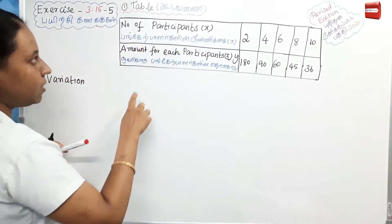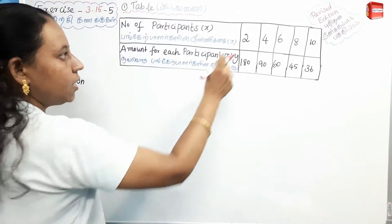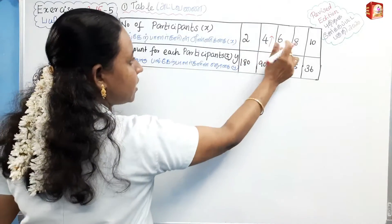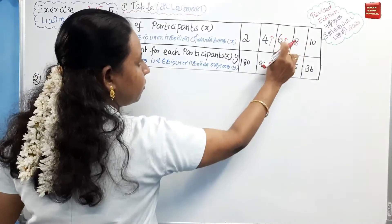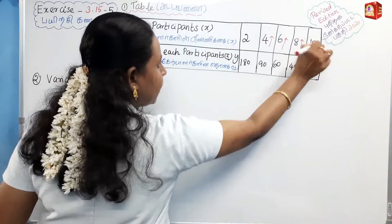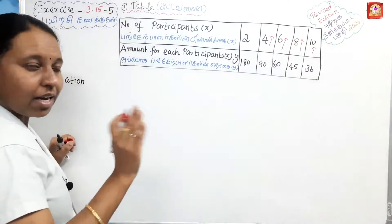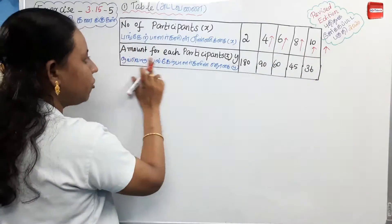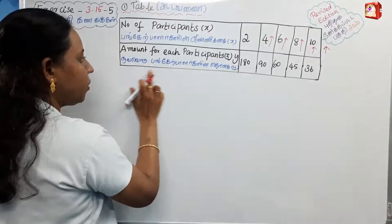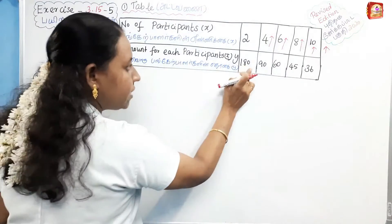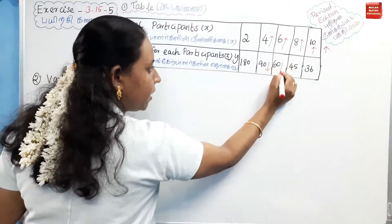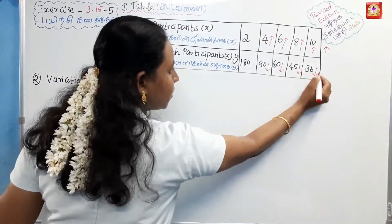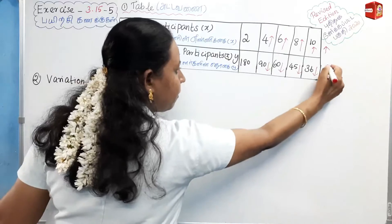First, the number of participants. In order to compare: 2 to 4 — increase; 4 to 6 — increase; 6 to 8 — increase; 8 to 10 — increase. So overall, the number of participants is increasing. Next, the amount for each participant: 180 to 90 is reduced; 90 to 60 is reduced; 60 to 45 is reduced; 45 to 36 is reduced. Overall, the amount is decreasing.